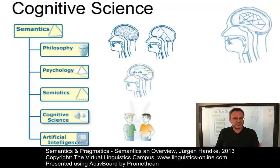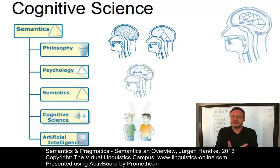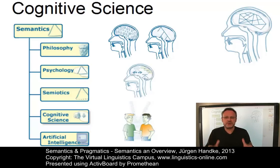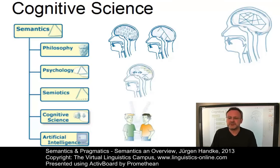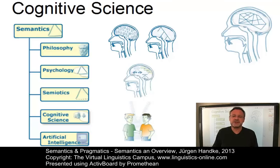Semanticists inspired by the ideas of cognitive science see language as part of our general cognitive ability. They argue that we have no access to a reality which is independent of human categorization. From their point of view, the structure of reality is a product of the human mind created with language. This school of thought, which is in sharp opposition to traditional approaches to semantics, is called cognitive semantics.